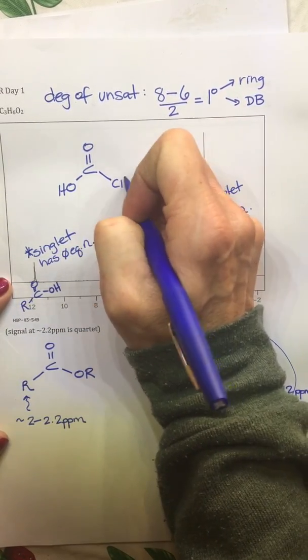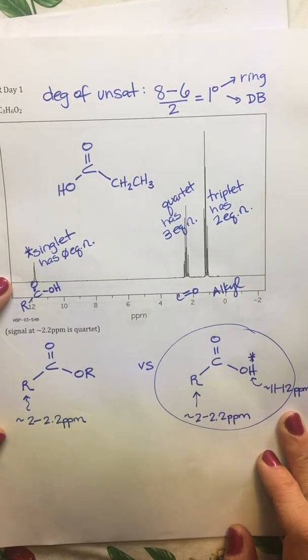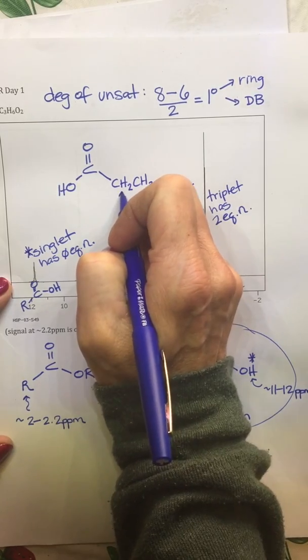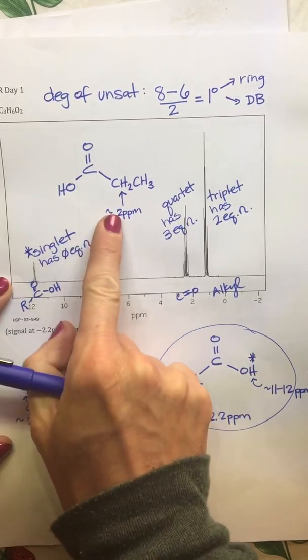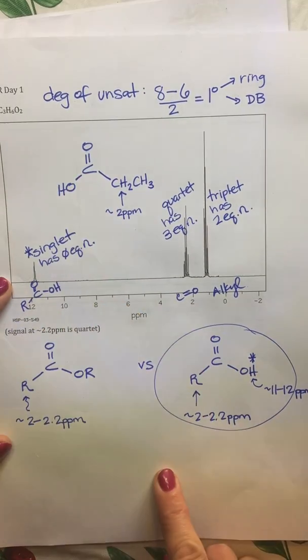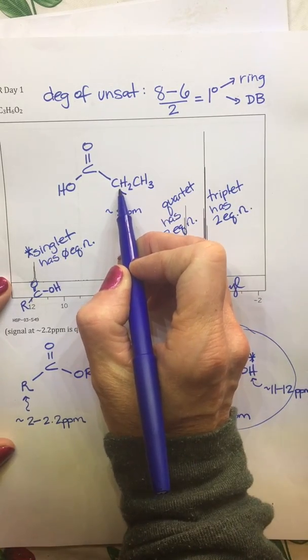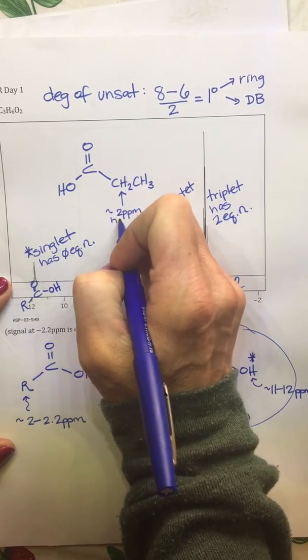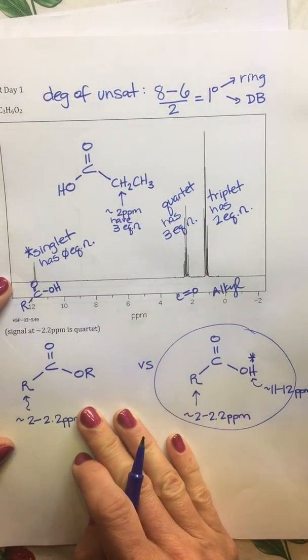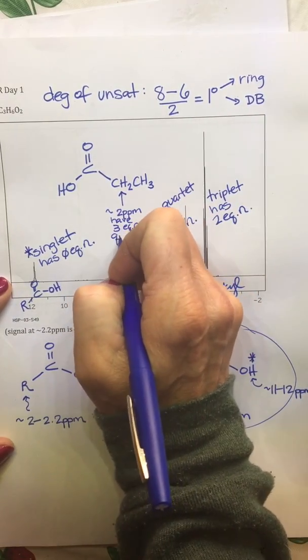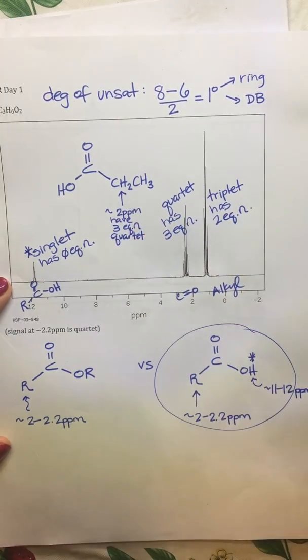So you already know that our downfield hydrogen at 11 ppms is this guy that has no neighbors. We only have two more carbons. The only way that we could attach them would be a CH2 and a CH3. Now if we go back and label these guys right here, they should be around 2 ppms because they are adjacent to the carbonyl bond. And they in fact have - if we count how many neighbors - they have three equivalent neighbors.